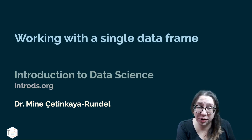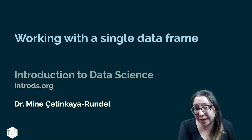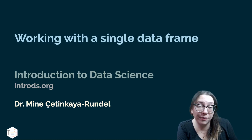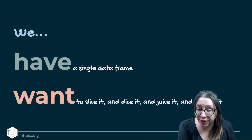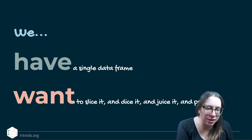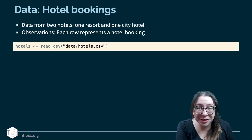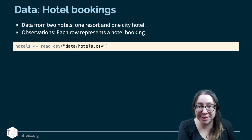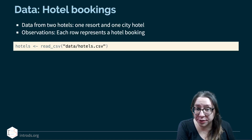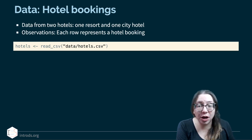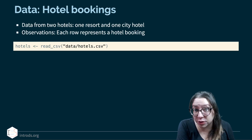Now that we've been introduced to the idea of grammar of data wrangling, let's start applying these functions to a single data frame. We're going to assume that we have a single data frame and we want to slice it, dice it, juice it, and process it. We're going to continue working with the hotels booking data set, where data comes from two hotels — a resort and a city hotel — and each observation represents a hotel booking.